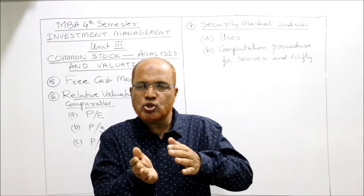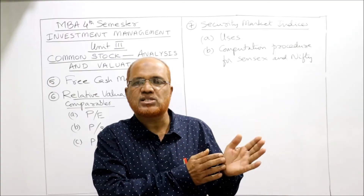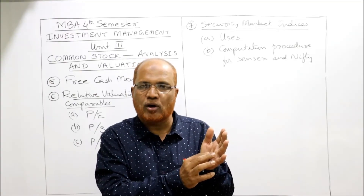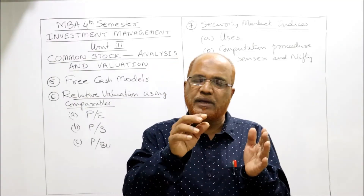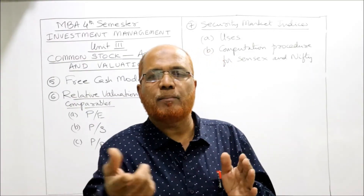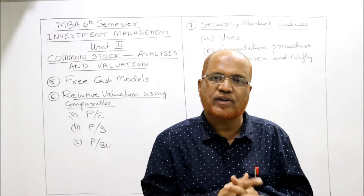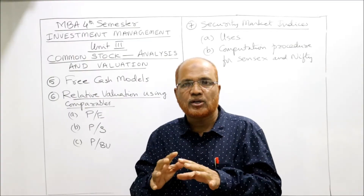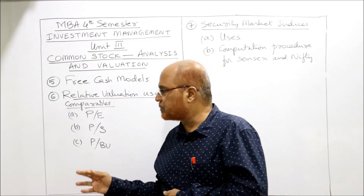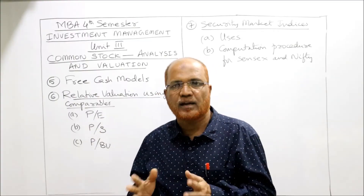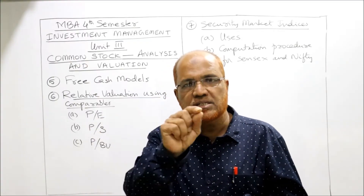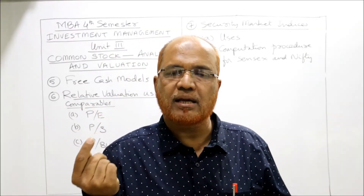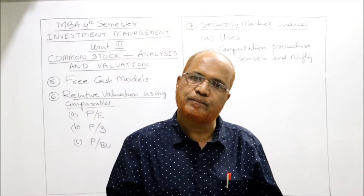First we find the P/S ratio for the last few years and calculate the average P/S ratio. This average P/S ratio is then multiplied by the total sales revenue of the current year to get the total market capitalization of the current year. Dividing by the number of equity shares gives us the market price or intrinsic value per share.